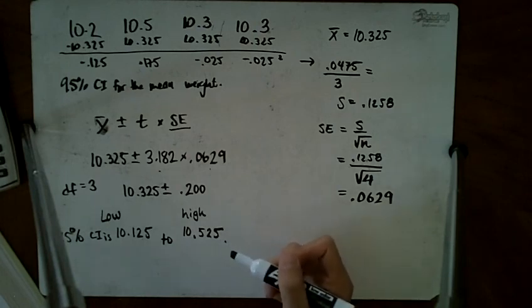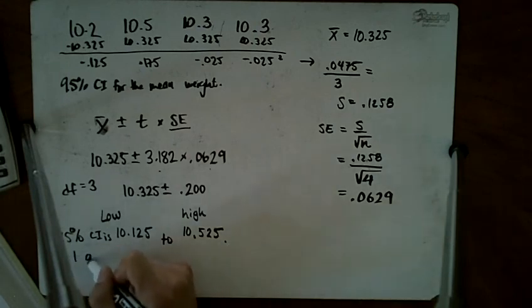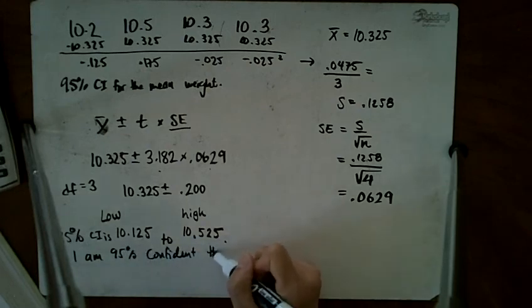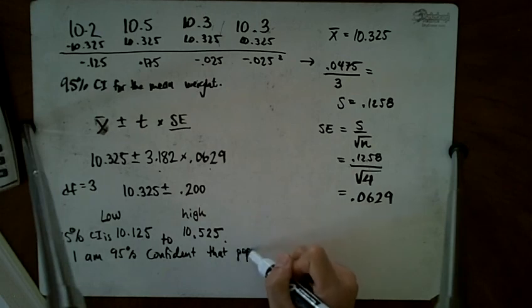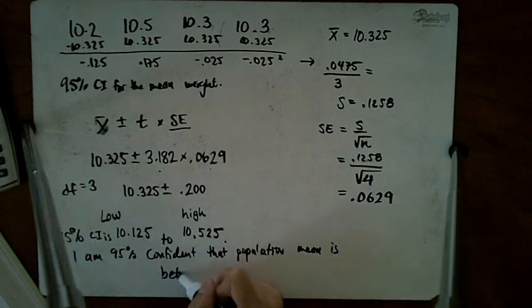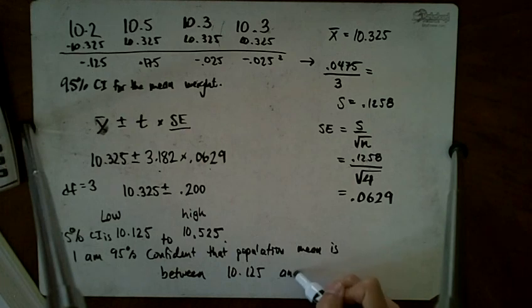My 95% confidence interval is from 10.125 to 10.525. I am 95% confident that the population mean is between 10.125 and 10.525 pounds.